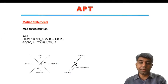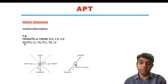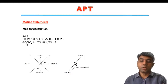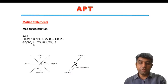In the case of a motion statement, you write it as: motion slash description. For example, FROM / P0 means the tool is required to start from that point. You can also write it as FROM / 0.0, 1.0, 2.0 using direct coordinates. Then you can give motion commands like: GO / TO L1, TO PL1, TO L2 — meaning the tool goes from line L1 to PL1 to L2, where these lines were already defined using geometric statements.